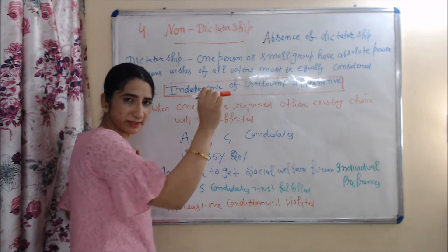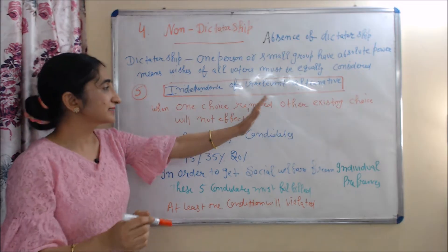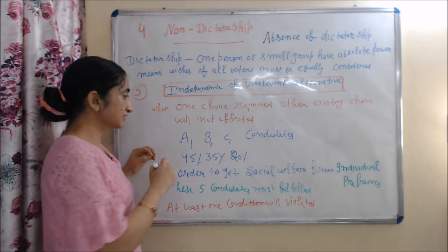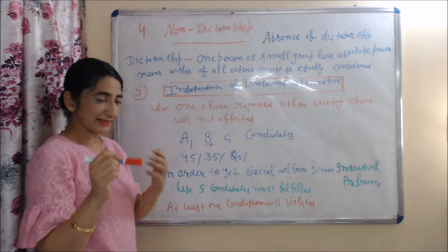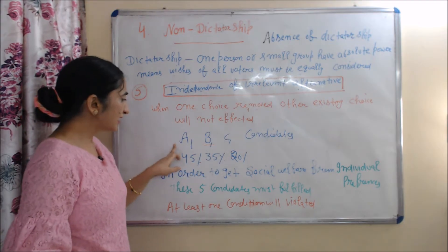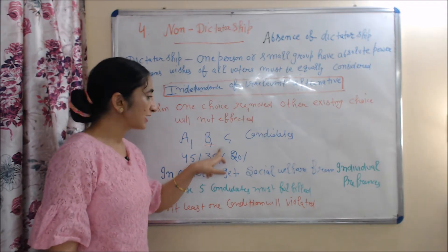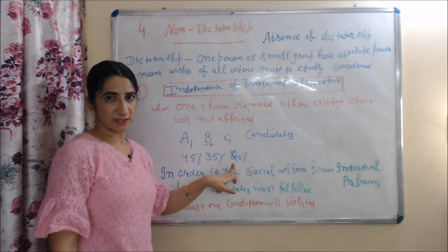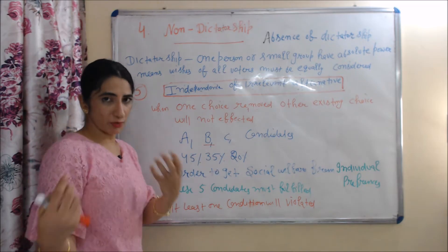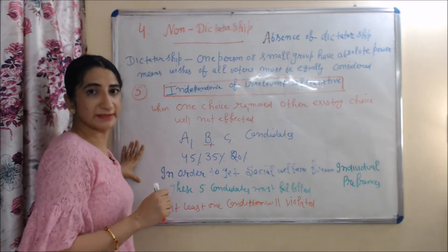The next condition is independence of irrelevant alternatives. It means when one choice is removed, the other existing choices will not be affected. For example, if we have three candidates A, B, and C, with A getting 45% of votes, B getting 35%, and C getting 20%, and if candidate B is removed, then candidates A and C should not be affected.